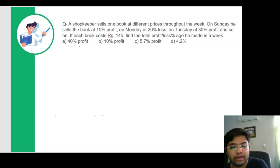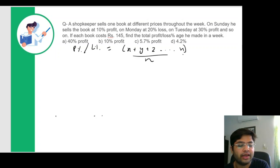So I'm going to write the formula here, profit percent or loss percentage that depends on the values is equal to X plus Y plus Z divided by N that is the number of these percentages that we're taking. So let's try it in this question.